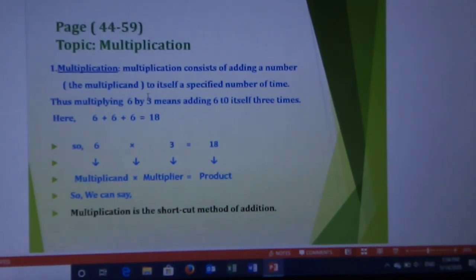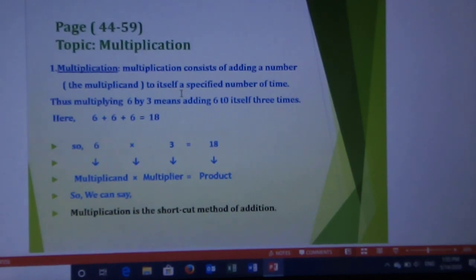First of all, of course, we will know what is multiplication. Multiplication consists of adding a number to itself a specified number of times. Thus, multiplying 6 by 3 means adding 6 to itself 3 times. Here, 6 plus 6 plus 6 equals 18. Here, 6 have 3 times, 1, 2, 3.